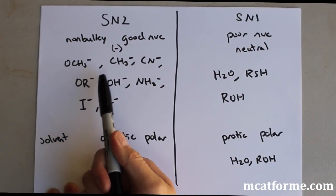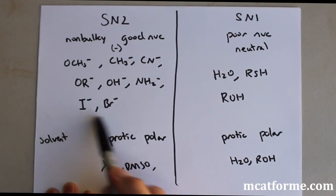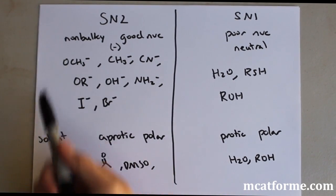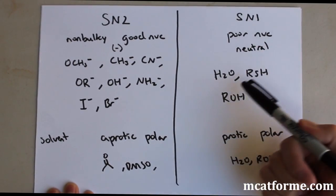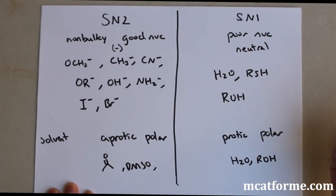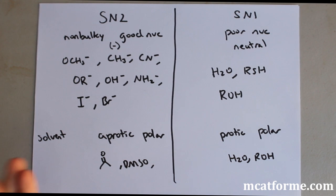We see some examples of that. We'll see here OCH3-, CH3-, the halogens, OR-, OH-, are going to be non-bulky good nucleophiles. Poor nucleophiles, neutral generally H2O, alcohols.